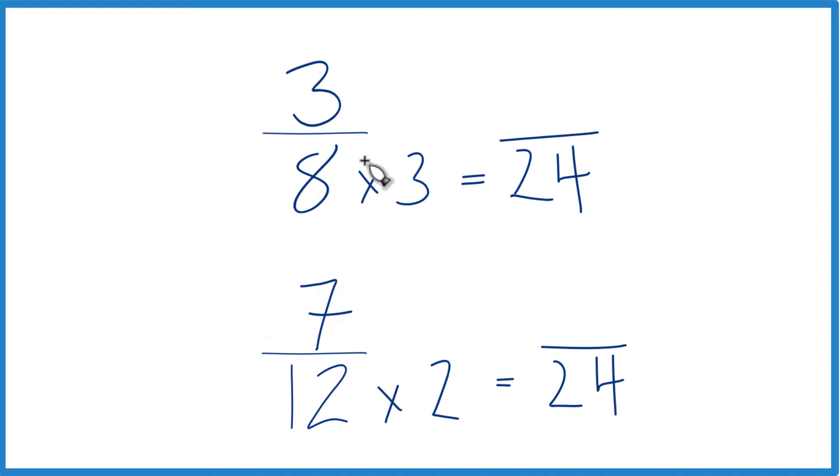Since we multiplied the denominator by 3, we need to multiply the numerator by 3. 3 times 3 is 9. And down here we multiplied by 2, so let's multiply the numerator by 2. 7 times 2 is 14.